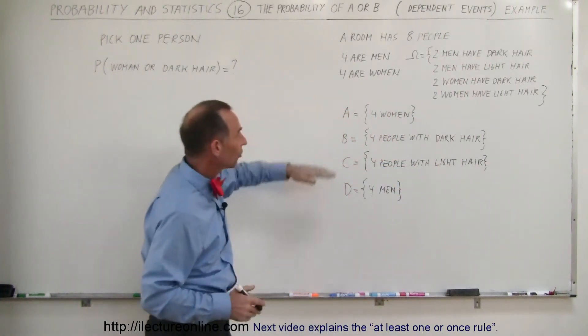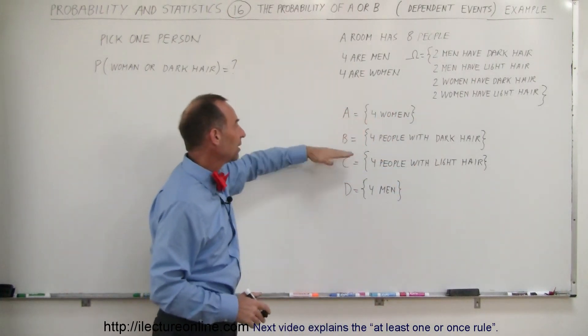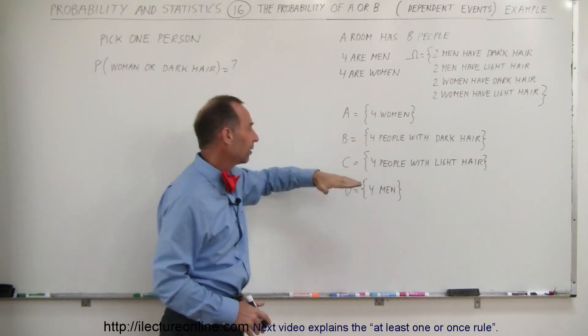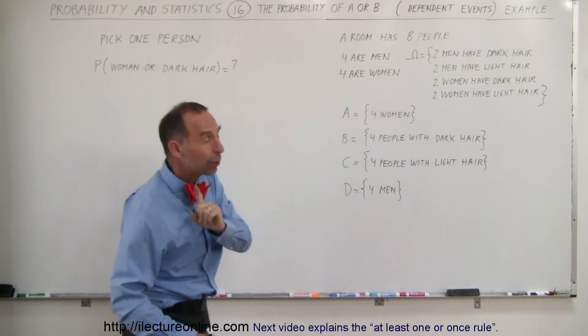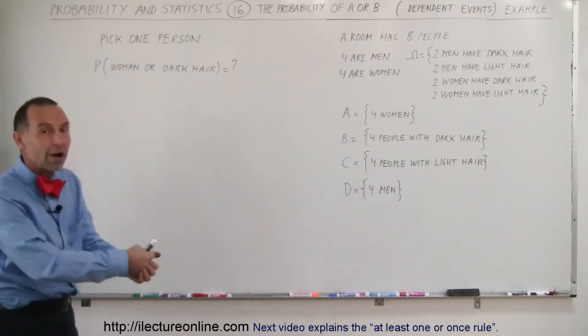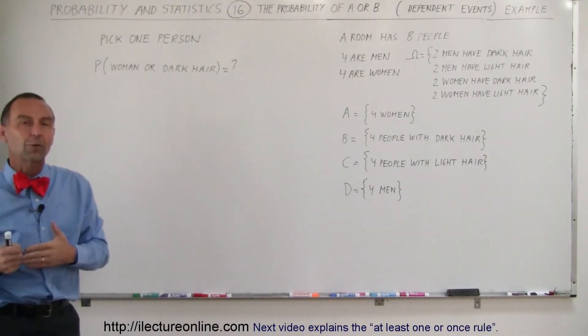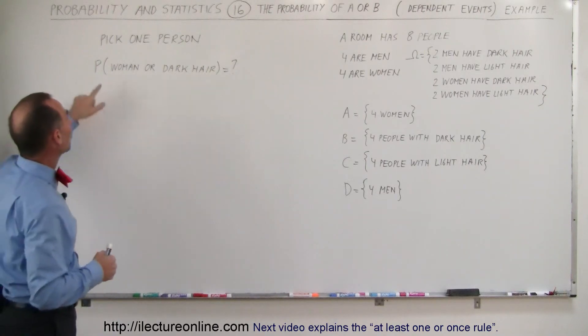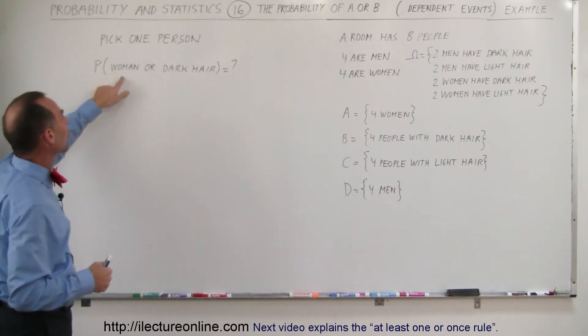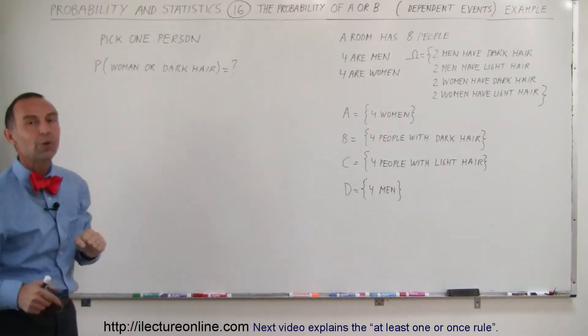Let's say we have four events: A is women, B is people with dark hair, C is people with light hair, and D is men. What we're looking for is we're going to draw blindly one person out of the room. What will be the probability that it's a woman or somebody with dark hair?